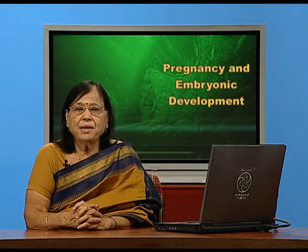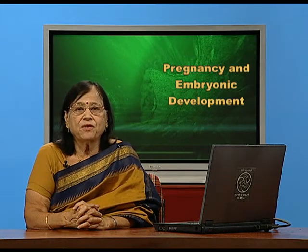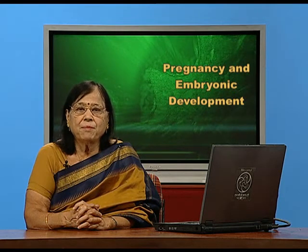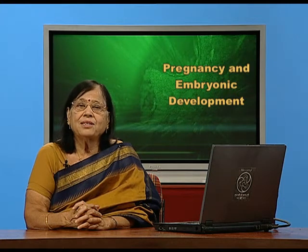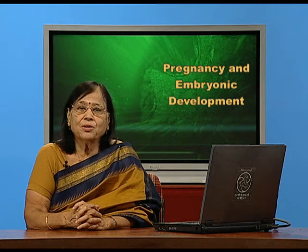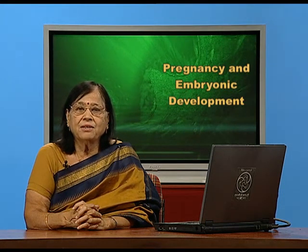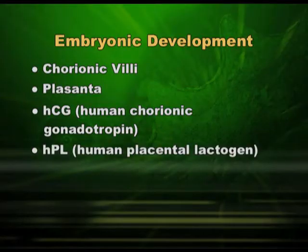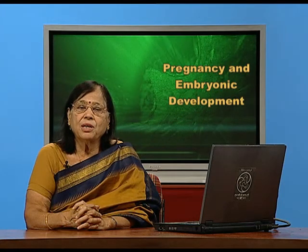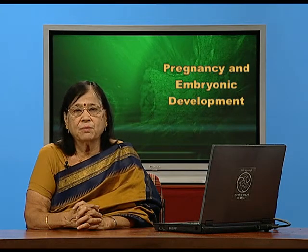We do not have a placenta all the time — only during pregnancy — meaning it is a temporary endocrine gland. Placenta looks after pregnancy for 6 months: the second trimester and third trimester. The human gestation period is 9 months, divided into 3 trimesters. The first trimester is looked after by the corpus luteum, which lives for 90 days. The second and third trimesters — 6 months — are looked after by the placenta. So placenta has a fixed lifespan of 6 months and is a temporary endocrine gland, releasing hormone HCG.